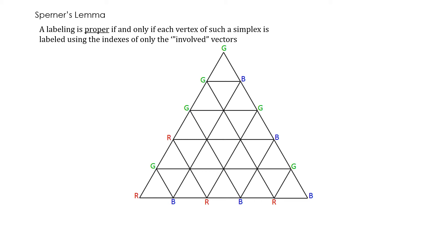A labeling is proper if and only if each vertex of a simplex is labeled using the indexes of only the involved vectors. So in other words, this is r and this is g. The involved vectors are g and r. So any vertex here can only be labeled r or g because the involved vectors are r and g.